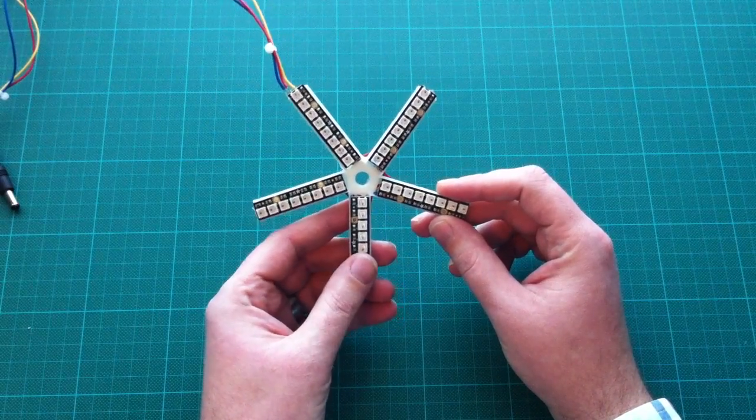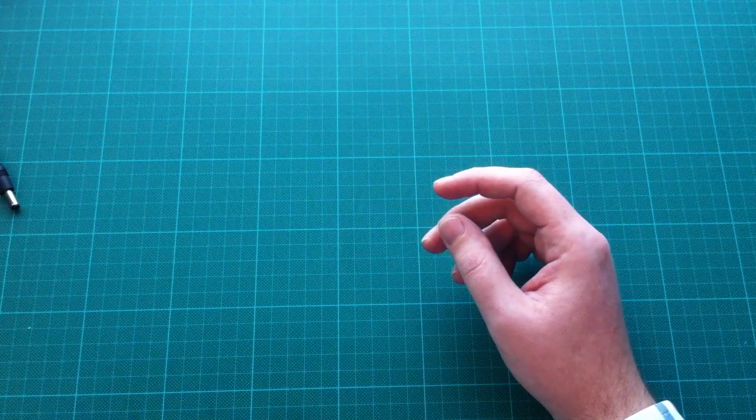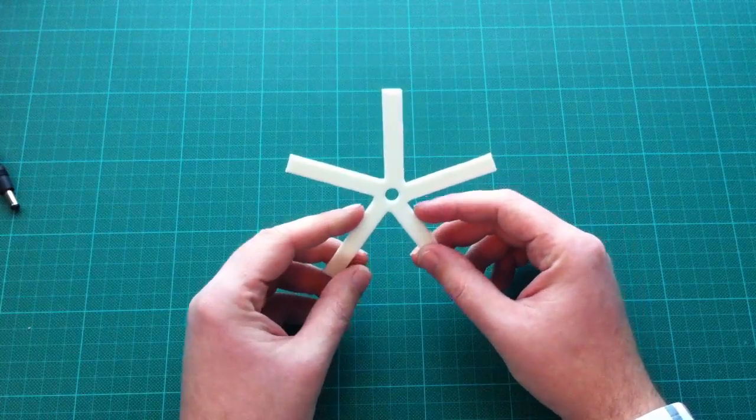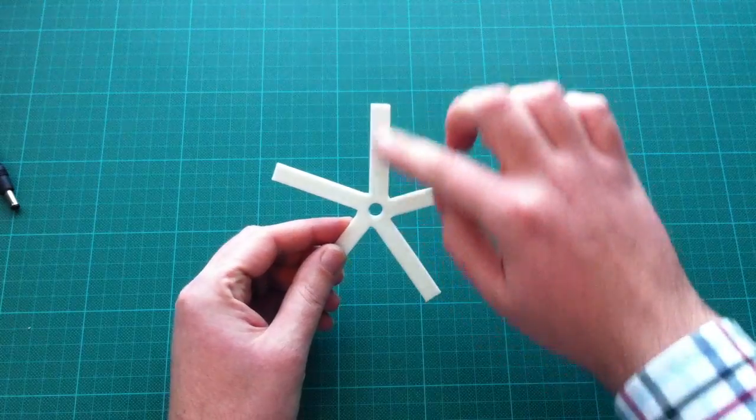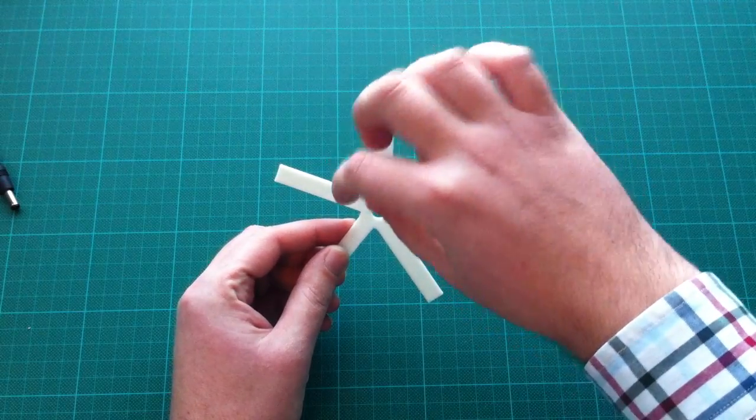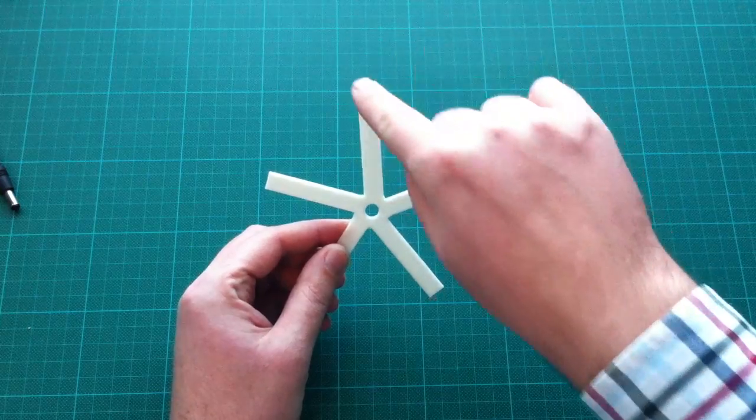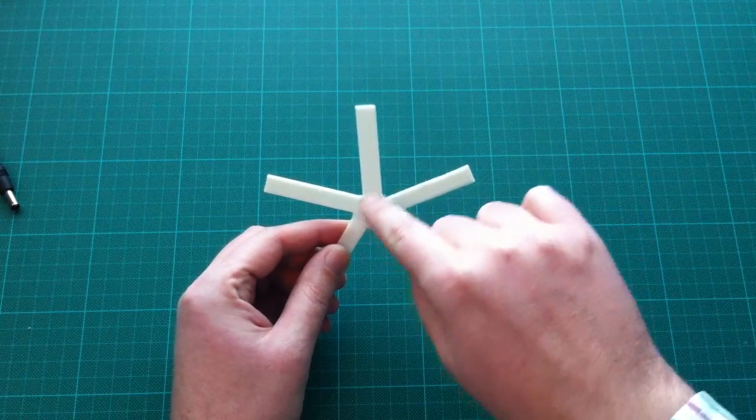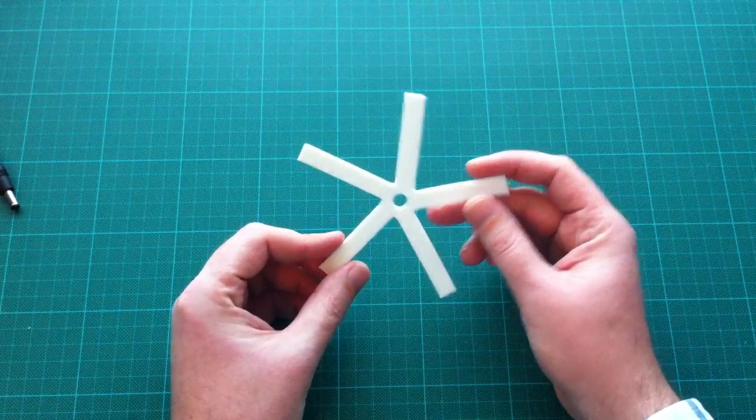To make the star, I started off by 3D printing a star shape, like this. You can see it's a bit off-center, but that's because the LEDs on the stick are not centered, so by placing the sticks here, the LEDs will be centered on the star. You'll see that in a minute.